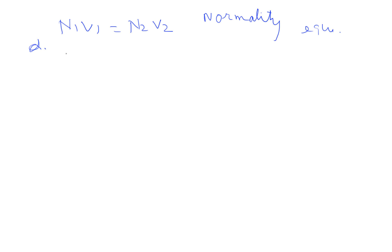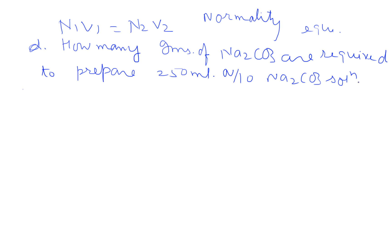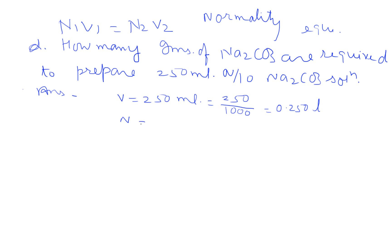Now we will solve some numericals. How many grams of sodium carbonate are required to prepare 250 ml of N/10 sodium carbonate solution? Volume is given as 250 ml. For calculation of normality, volume is required in liters, so 250 divided by 1000 gives 0.250 liters. Normality is 1/10.